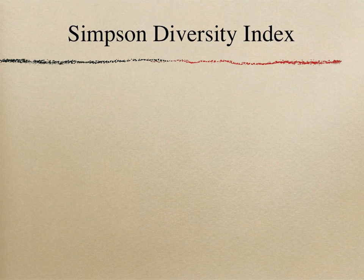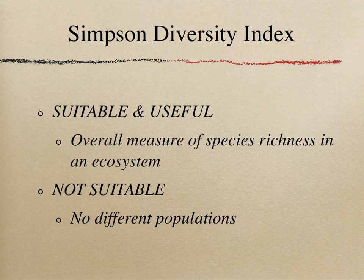Simpson Diversity Index is frequently used and suitable when you need to measure species richness in an ecosystem. It is easy to compare the biodiversities of two locations with different conditions. If there are no different species in an area, there is no significant meaning for the calculation.